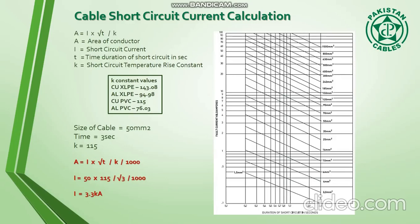The formula is: area of the conductor equals I into root T divided by K. I is basically the short circuit current. T is basically the time duration of short circuit in seconds. K is basically a constant value — a short circuit temperature rise constant. You have to remember this constant value and note it down.